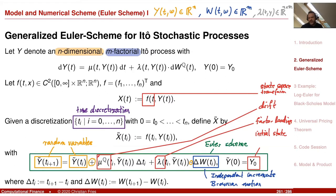There was a question: does it actually happen that we use non-equidistant time discretizations? Yes, this can happen. For example, if you have a financial product with certain events on certain dates, it's a nice idea to use a time discretization with a discretization point on those events. A product might do a fixing two weeks before a payment, and do this every year. So it can be reasonable to use a different time discretization, and it doesn't cost much to make it flexible.